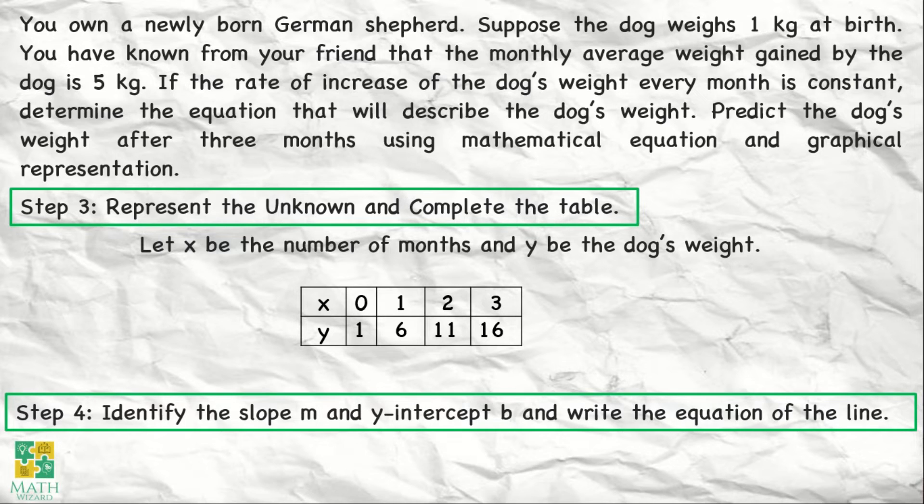For step number 4, we need to identify naman the slope, m and y-intercept b, and write the equation of the line. Now, ano ibig sabihin ng slope? Alam natin na ang slope is the change in y over the change in x. Alamin natin kung ano yung change in y based sa ating table values over the change in x sa ating table values.